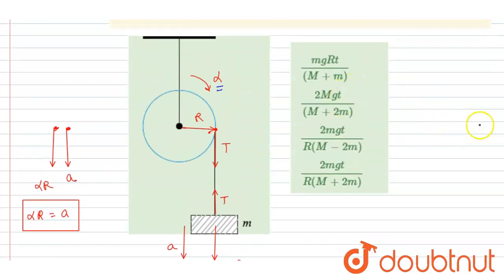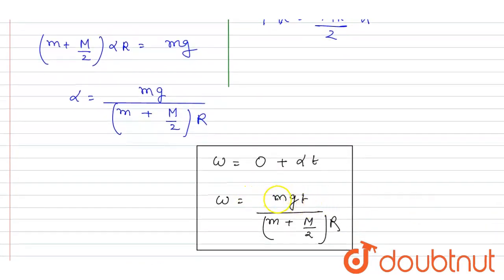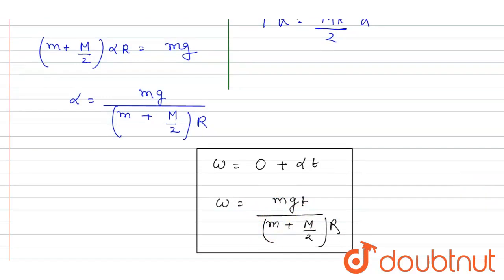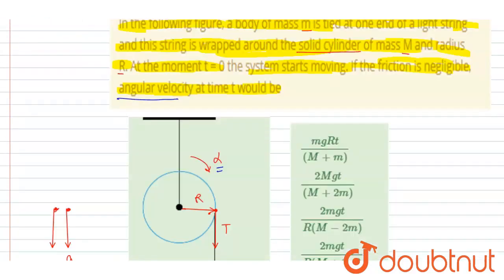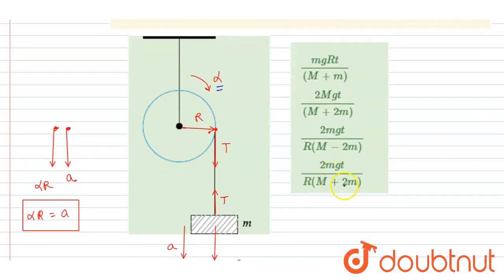Now, if you see here MGT upon M plus capital M by 2 into R is our answer. Now, you can take the two common. And if you take the two common here, if you multiply and divide it by two, you will get this answer. If you see, 2 small MGT upon capital M plus 2M by R. So D is the correct answer. Thank you.